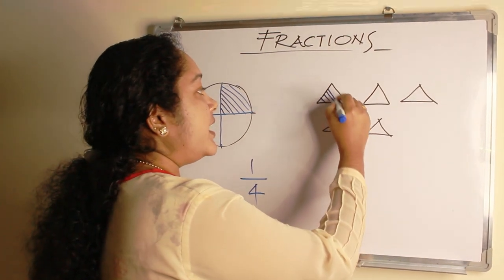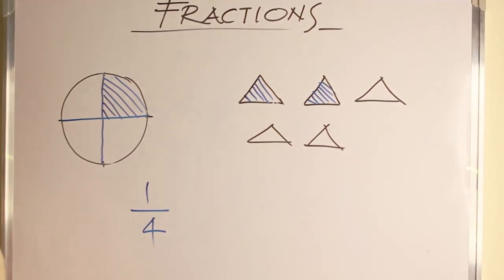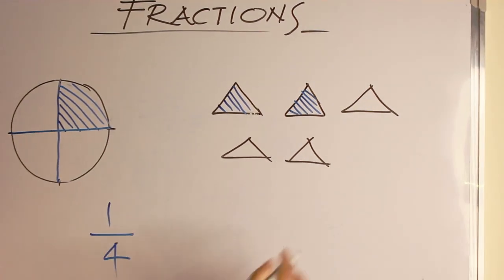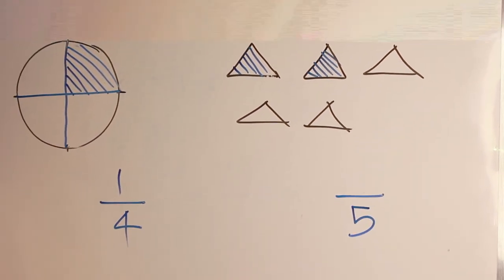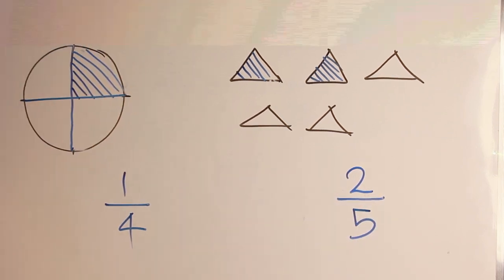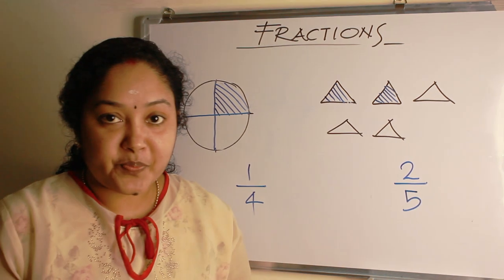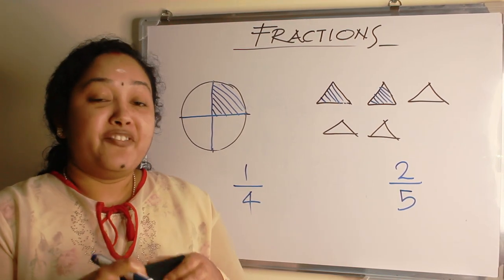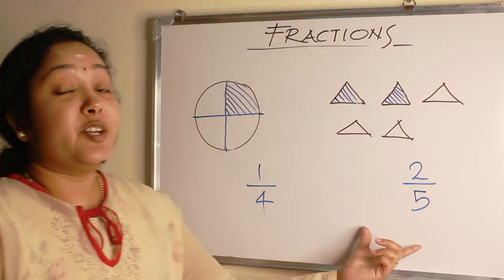If we shade 2 of this, number of groups is 5 as denominator, the shaded part 2 as numerator. So the fraction is 2 by 5. I repeat, Fraction represents a part of whole or a part of group.